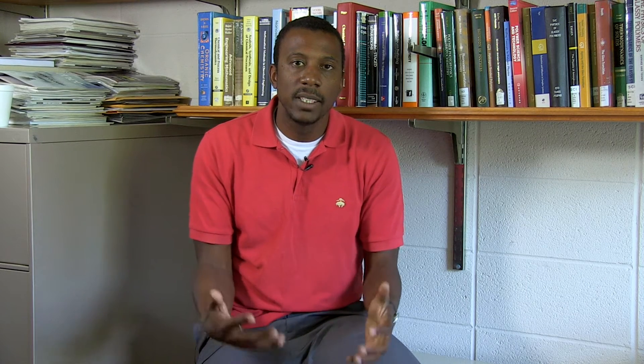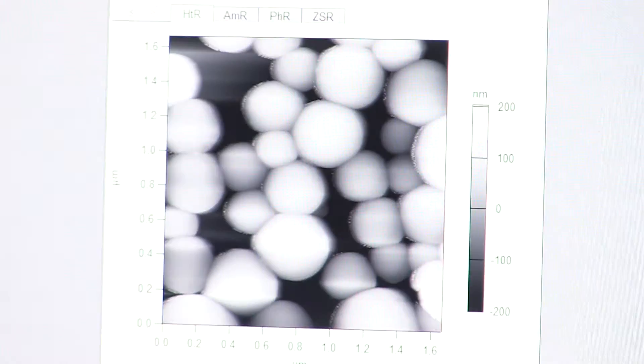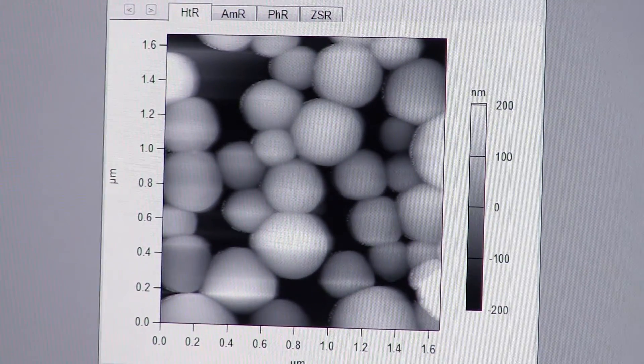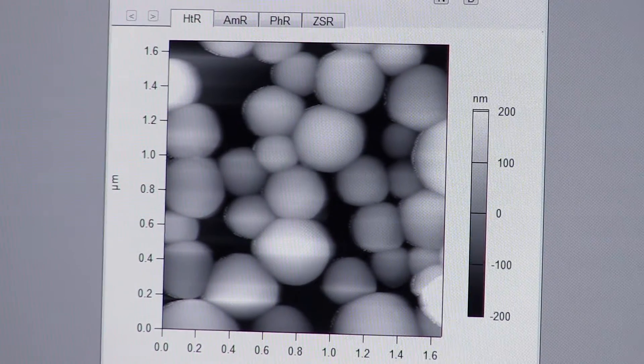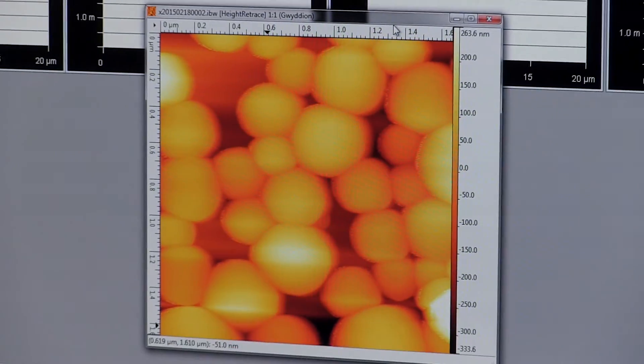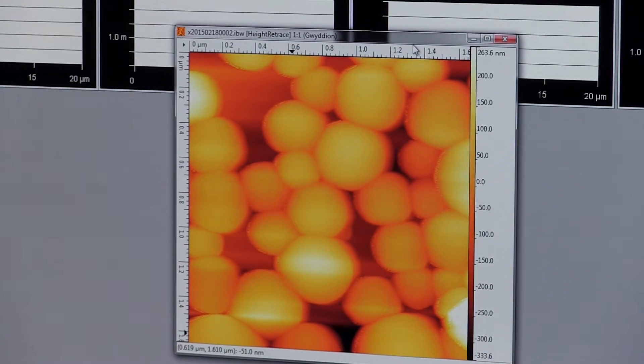Ultimately, we like to think that Janus colloids will one day replace molecular surfactants that are in common applications from healthcare products to personal care products, all the way to active components in electronic paper.